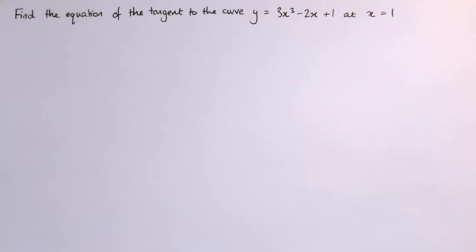I'd like to find the equation of the tangent to the curve y equals 3x³ minus 2x plus 1 at the point where x equals 1.